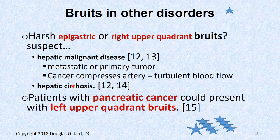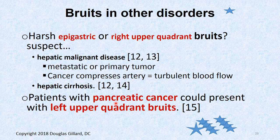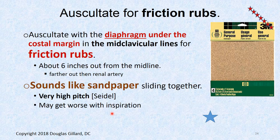A harsh epigastric or right upper quadrant bruit can also suggest liver disease — a primary tumor or metastatic disease of the liver. Cancer can compress smaller arteries in that region. Patients with pancreatic cancer can have bruits in their left upper quadrant from compression of vessels like the splenic artery.